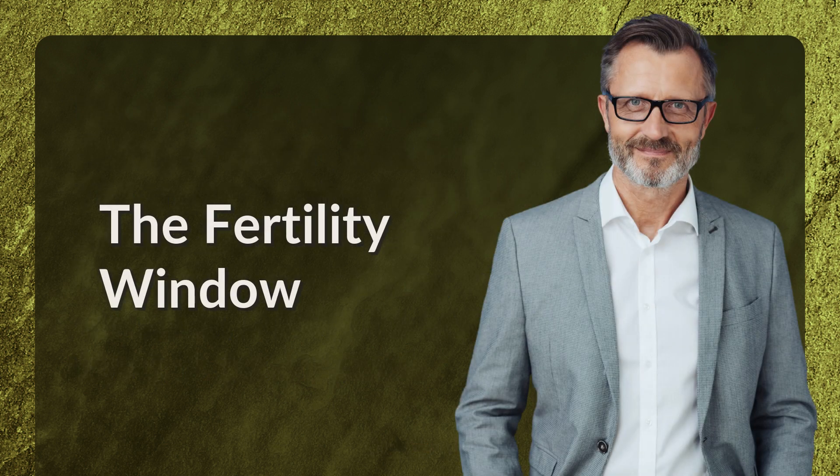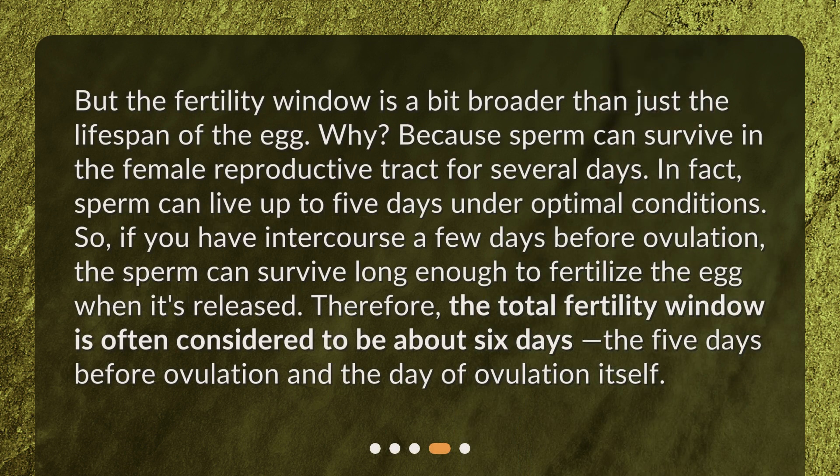The fertility window is a bit broader than just the lifespan of the egg. Why? Because sperm can survive in the female reproductive tract for several days — in fact, sperm can live up to five days under optimal conditions. So if you have intercourse a few days before ovulation, the sperm can survive long enough to fertilize the egg when it's released. Therefore, the total fertility window is often considered to be about six days: the five days before ovulation and the day of ovulation itself.